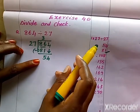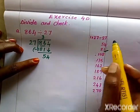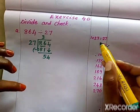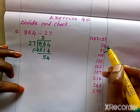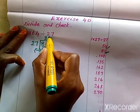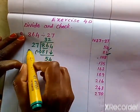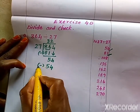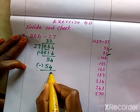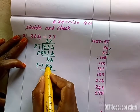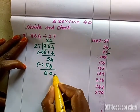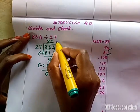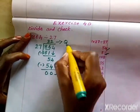Now we check whether 54 is in the 27 times table. Yes, we have 54 — 2 into 27 is 54 — so we write 2 as the quotient. Next we subtract: 4 minus 4 is 0, and 5 minus 5 is 0. So here 0 is our remainder and 32 is our quotient.